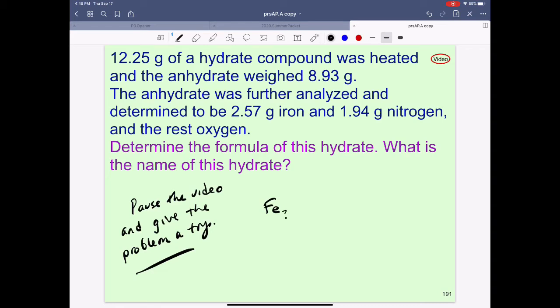So that means we're looking at a two-part problem. First, we have to figure out how much iron, how much nitrogen, how much oxygen is present in this anhydrate, and then how much water is actually part of the entire hydrate.